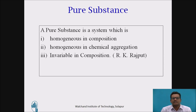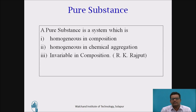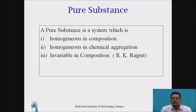A pure substance is a system which is homogeneous in composition, homogeneous in chemical aggregation, and invariable in composition. Homogeneous in composition means whatever elements are present, these elements are chemically combined.